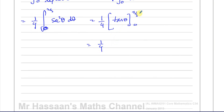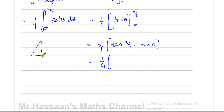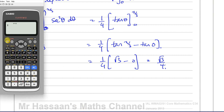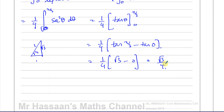Substituting the limits: (1/4)(tan(π/3) minus tan(0)). Now tan(π/3) = √3/1 = √3 from the 30-60-90 triangle (sides 1, 2, √3), and tan(0) = 0. So we get (1/4)(√3 minus 0) = √3/4. You can verify using a calculator in radian mode: tan(π/3) = √3. So the exact answer is √3/4.